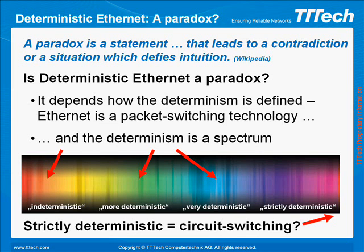The term determinism can vary in meaning. For example, it can mean maximum end-to-end latency only, or it can mean controlled latency jitter and message order. Depending on how we define determinism, we can see it as a spectrum, from indeterministic to more deterministic to strictly deterministic.